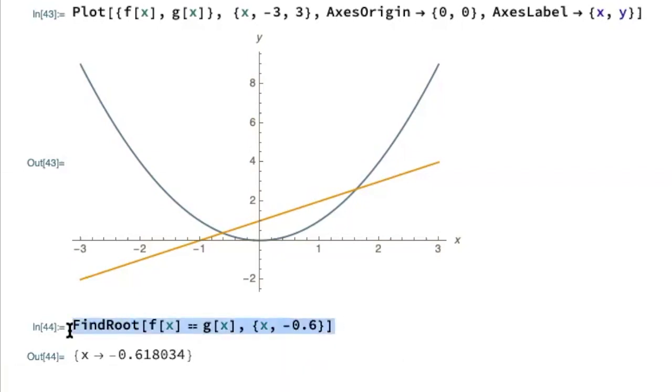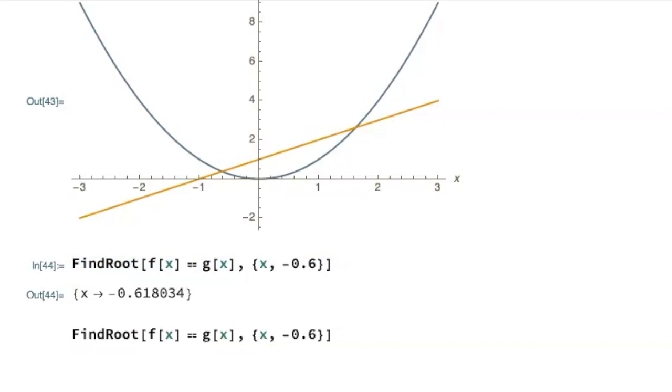I can take that FindRoot command again, copy and paste it into a new spot. And the positive root looks like maybe 1.6 to me. So that's going to be the estimate I use. And I get the positive root. Now your estimate does not have to be particularly close. I mean, I can say two, and it's still going to locate it. So you don't have to be super accurate when you're giving it the value to search near.